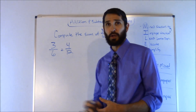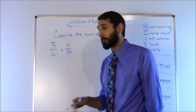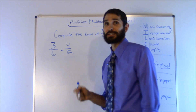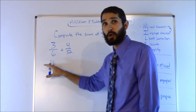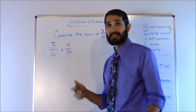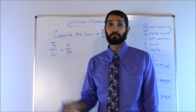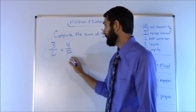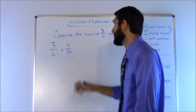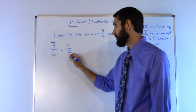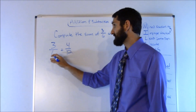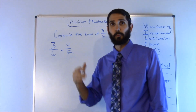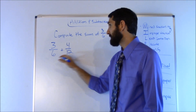Our next problem: compute the sum of 3 over 6 and 4 over 12. Going to MILES — M: no mixed fractions, just proper fractions. L for least common denominator: the denominators 6 and 12 are different, so we can't just add them. We need to find the least common denominator by starting with the larger number and checking if the smaller will divide into it evenly.